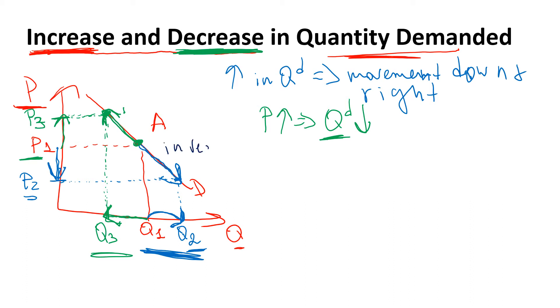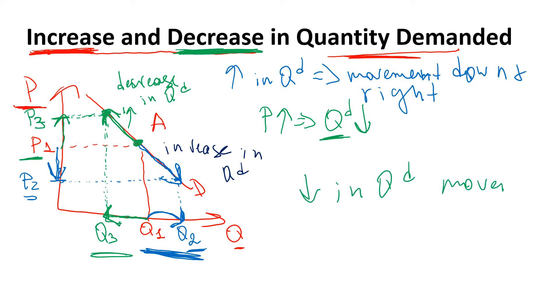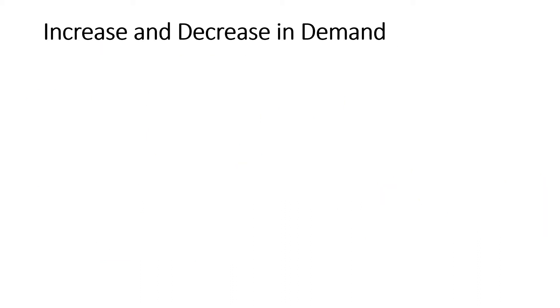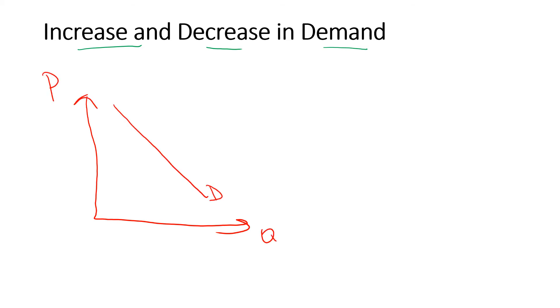This movement is increase in quantity demanded, and that movement was decrease in quantity demanded. Therefore, decrease in quantity demanded is movement up and left along the demand curve. Now, moving to the next one, we need to show you what is the difference, or how do we represent increase and decrease in the demand curve. Let's suppose, again, I'm going to have a demand for a certain product. Remember, demand is a downward sloping line.